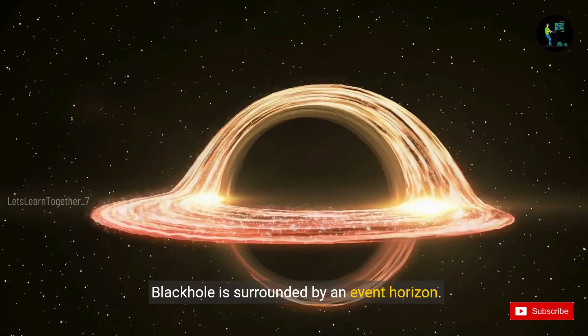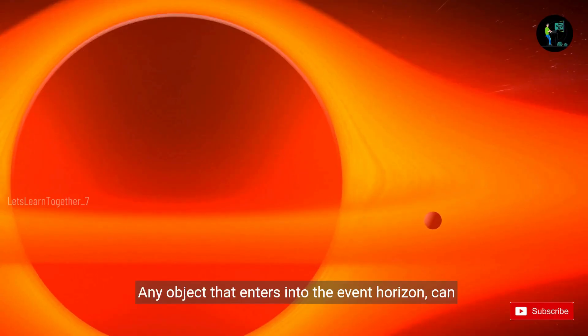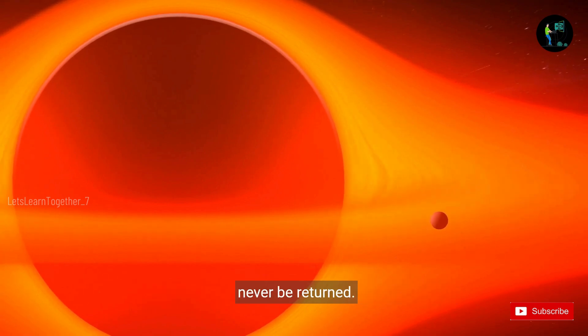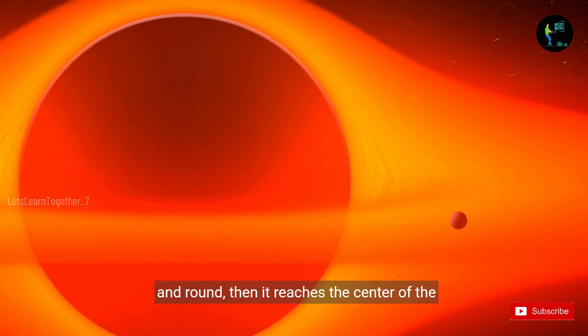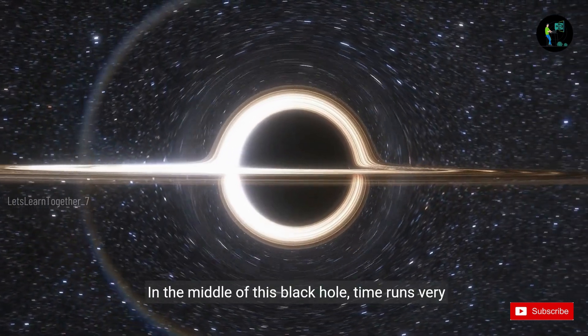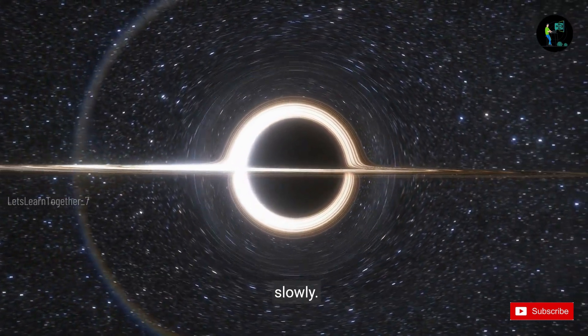A black hole is surrounded by an event horizon. Any object that enters into the event horizon can never be returned. Whatever object enters into this turns round and round, then it reaches the center of the black hole. In the middle of this black hole, time runs very slowly.